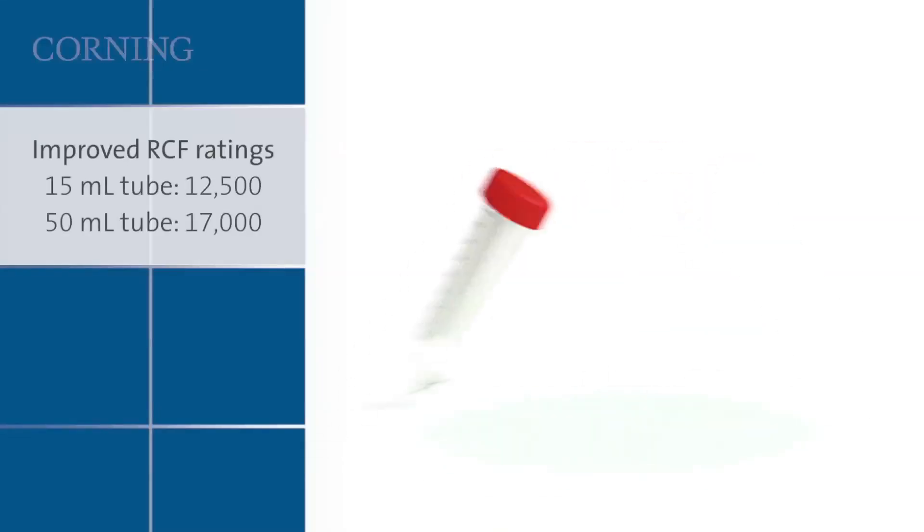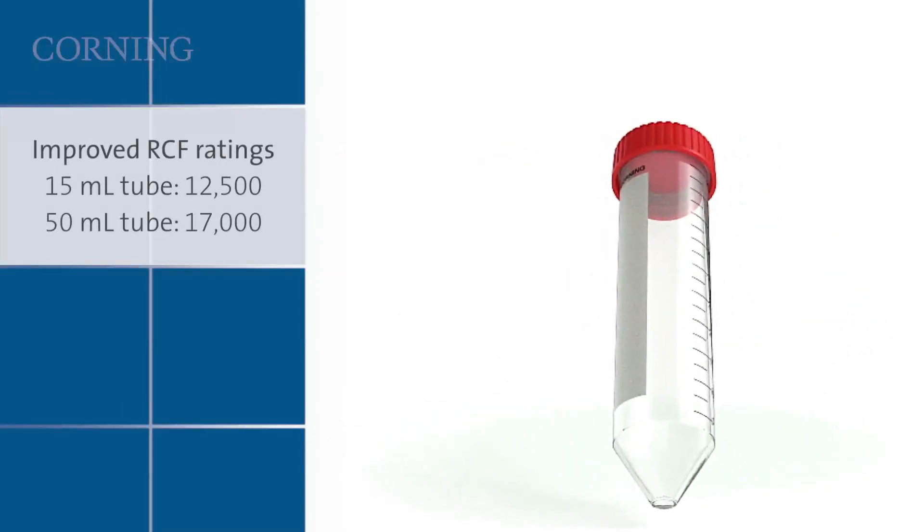Corning believes that product integrity is the key to superior performance. For high-speed applications, the Centristar centrifuge tube has improved maximum RCF ratings, 12,500 for the 15-milliliter tube and 17,000 for the 50-milliliter tube.